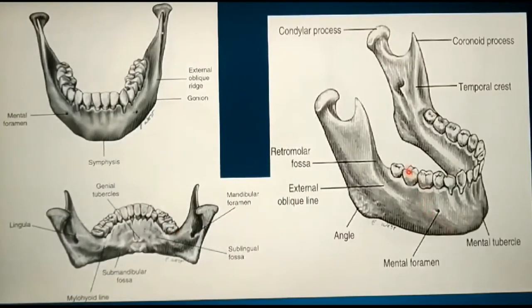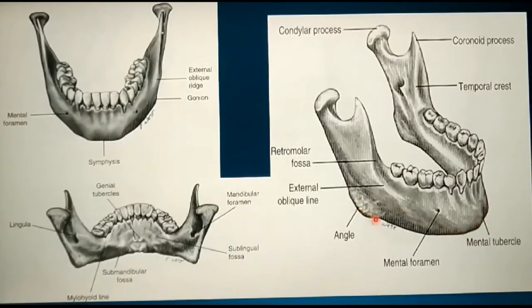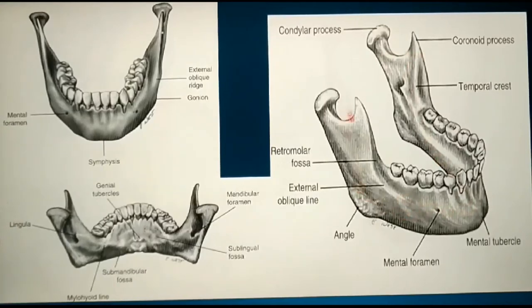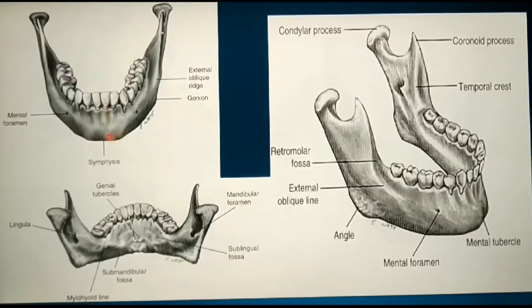The superior border is the alveolar process which contains the dentition. The inferior border is made up of thick cortical bone. The mandible has two surfaces: the outer lateral surface and an inner medial surface. The body of the mandible joins the ramus at the angle. The two bodies on either side fuse at the center called the symphysis, where there is a thickened cortical area known as the mental protuberance.